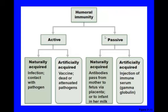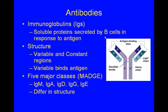This is a good overview of humoral immunity — the making of antibodies. You have active and passive, and then naturally and artificially acquired. Antibodies are immunoglobulins, also called IGs. They are soluble proteins created by B cells in response to a non-self antigen. The structure has variable and constant regions — the variable end is what binds the antigen. There are five major classes: IgM, IgA, IgD, IgG, and IgE. They all differ in structure and function.